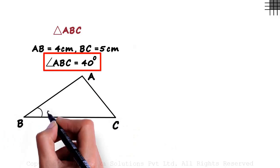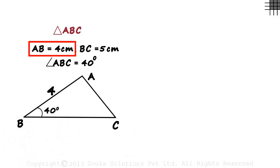Angle ABC is 40 degrees, AB is 4 centimeters, and BC is 5 centimeters.